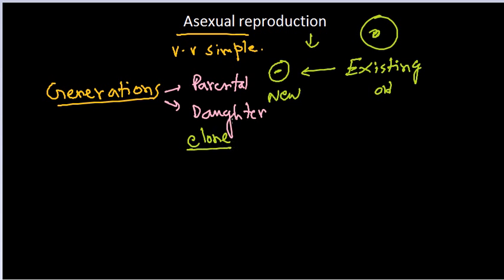For example, if the parent cell has one nucleus and one vacuole, the daughter cell will also contain one nucleus and one vacuole. Not only that, but the amount of all materials inside the cell will also be the same, so that the daughter can develop into a mature individual and give rise to another organism.